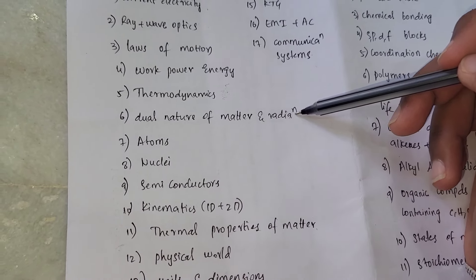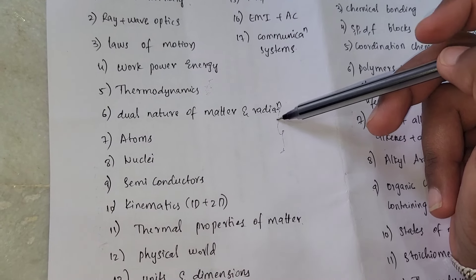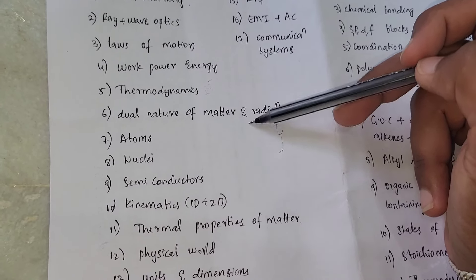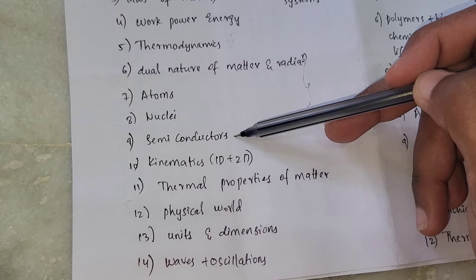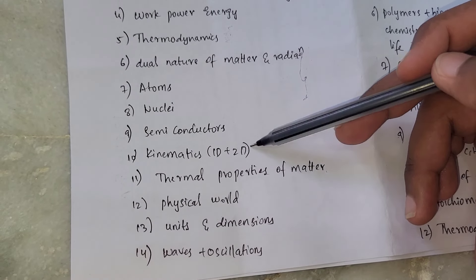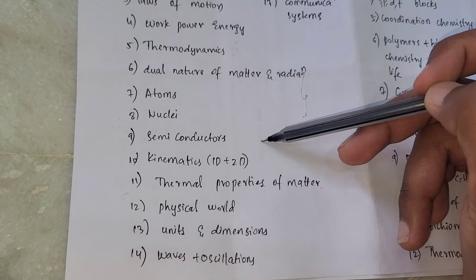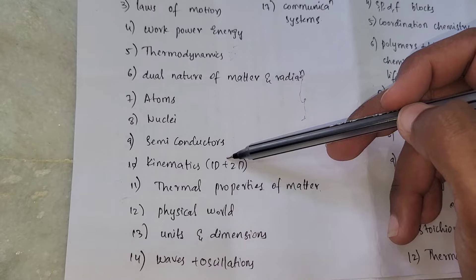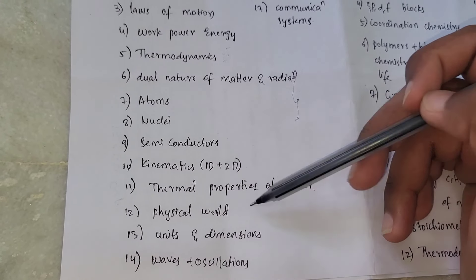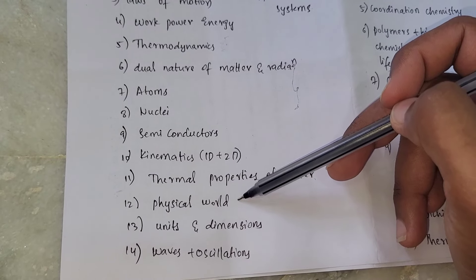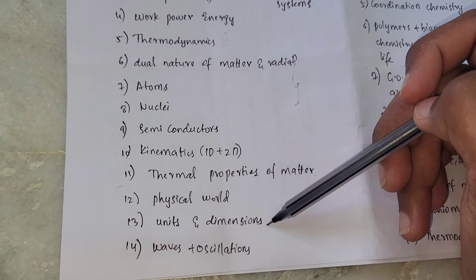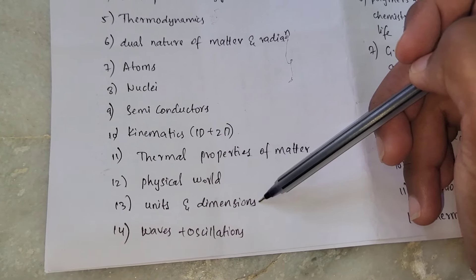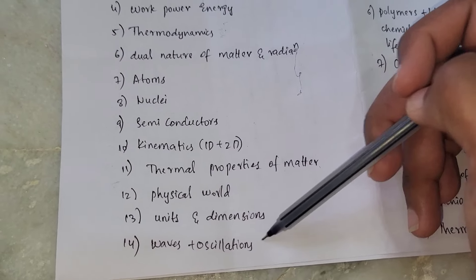Next is modern physics - one of the easiest. This means dual nature of matter and radiation, atoms and nuclei. Modern physics and atomic physics - one of the most easiest chapters. Next, logic gates. Next, kinematics 1D plus 2D - some problems with projectiles, a ball. There are some types of problems, a little easier but some complex in 2D.